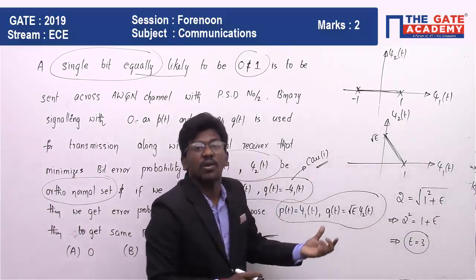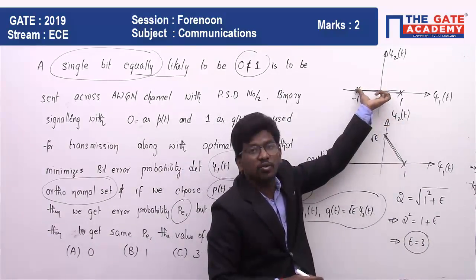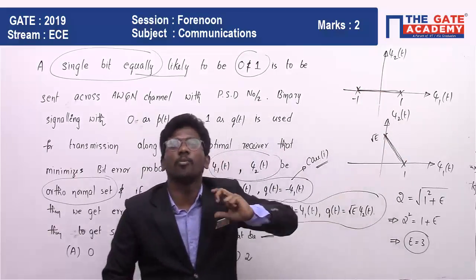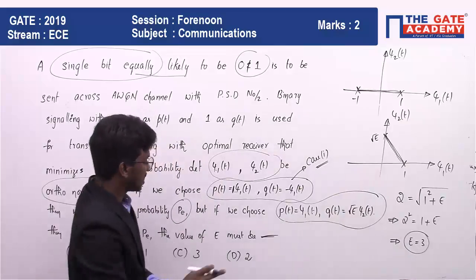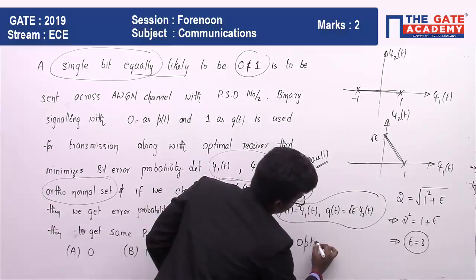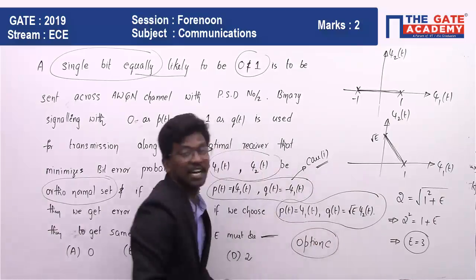When E equals 3, the distance between the two constellation points will be the same. Whenever distance between two constellation points is the same, the probability of error is the same. So the answer for this is 3, that is option C.